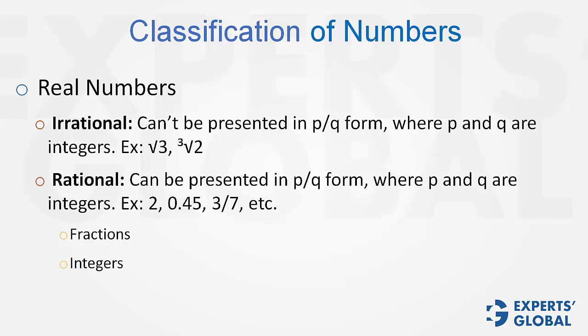Integers can be further classified in multiple ways. Even odd is one way. Even integers are integers which are multiples of 2. Odd are the integers which are not.